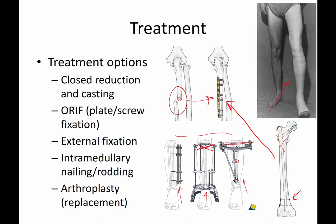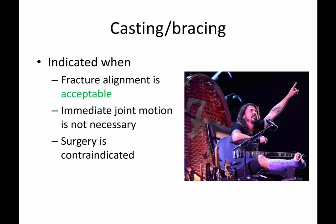One additional type of treatment — I didn't show an image here — is arthroplasty. Arthroplasty is essentially a joint replacement, which is something you can do for certain articular or periarticular fractures.